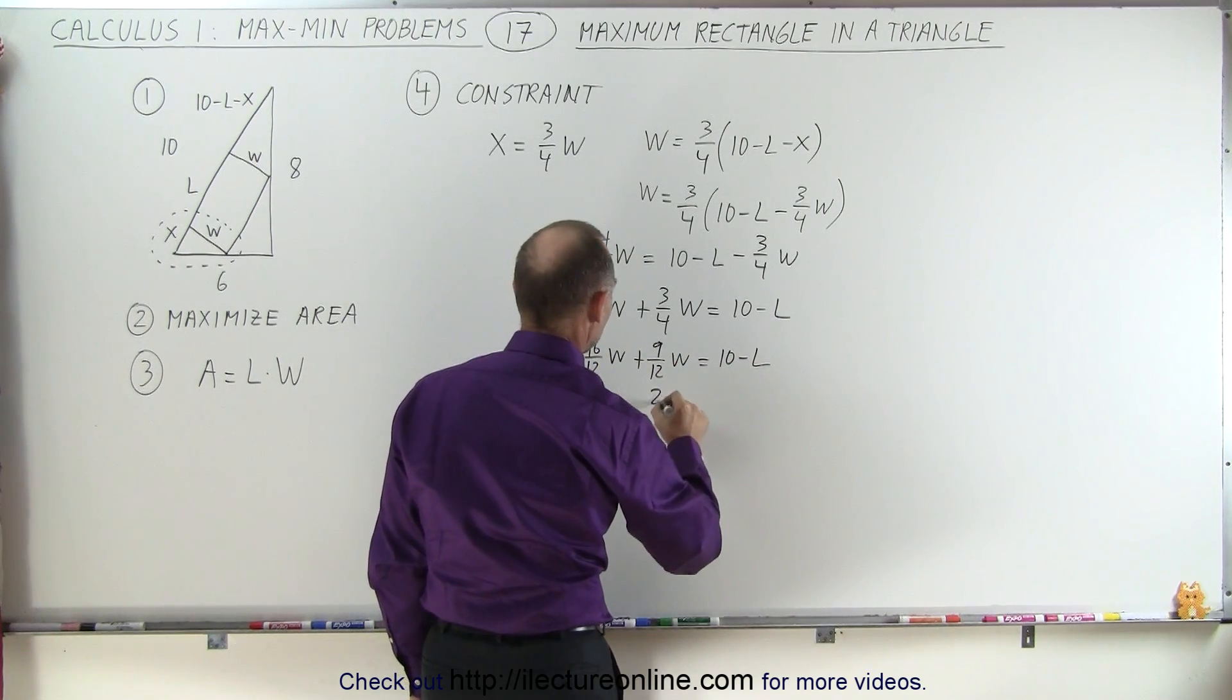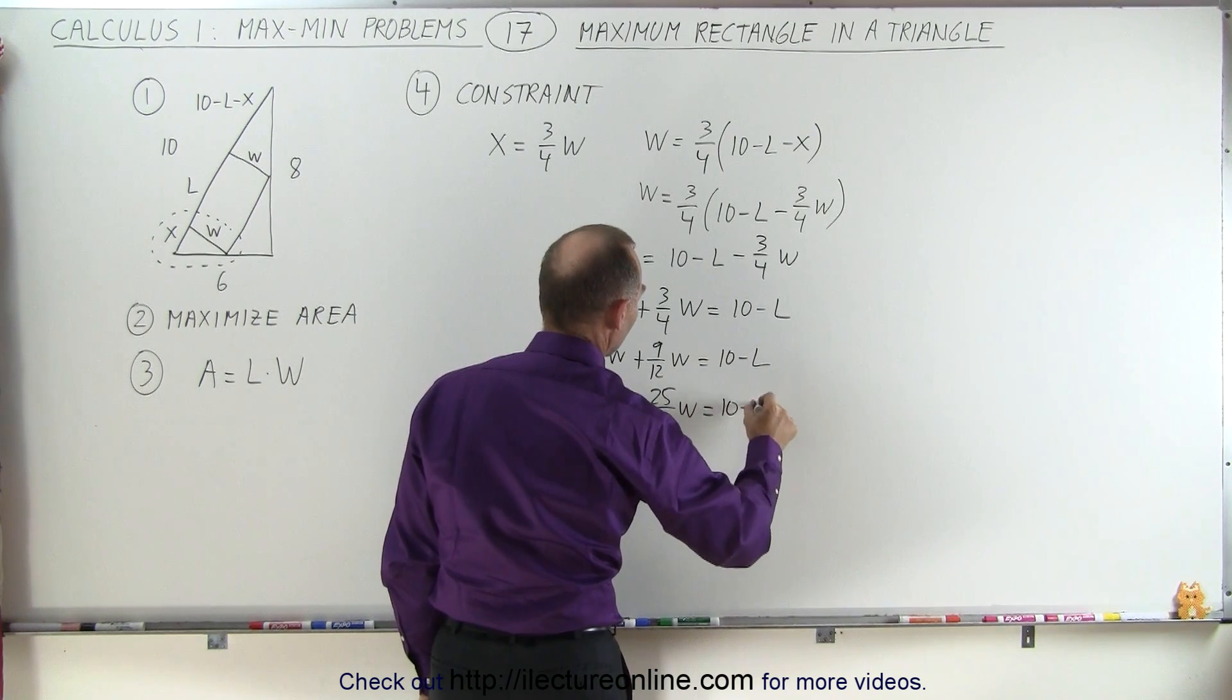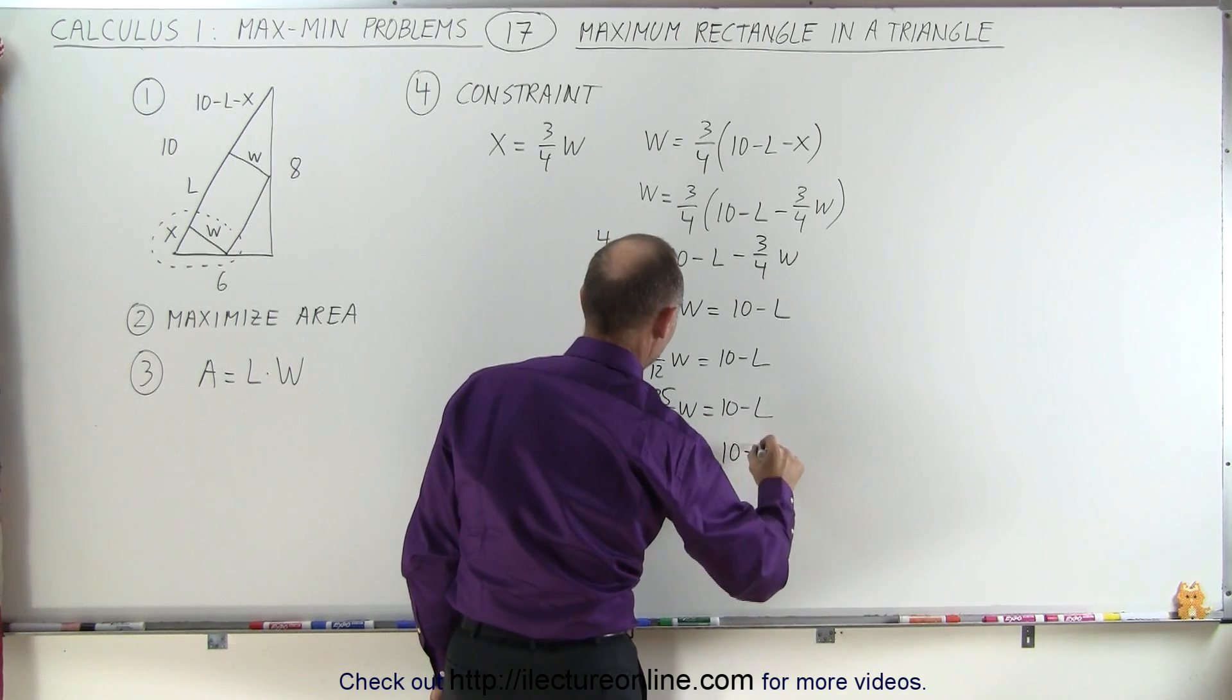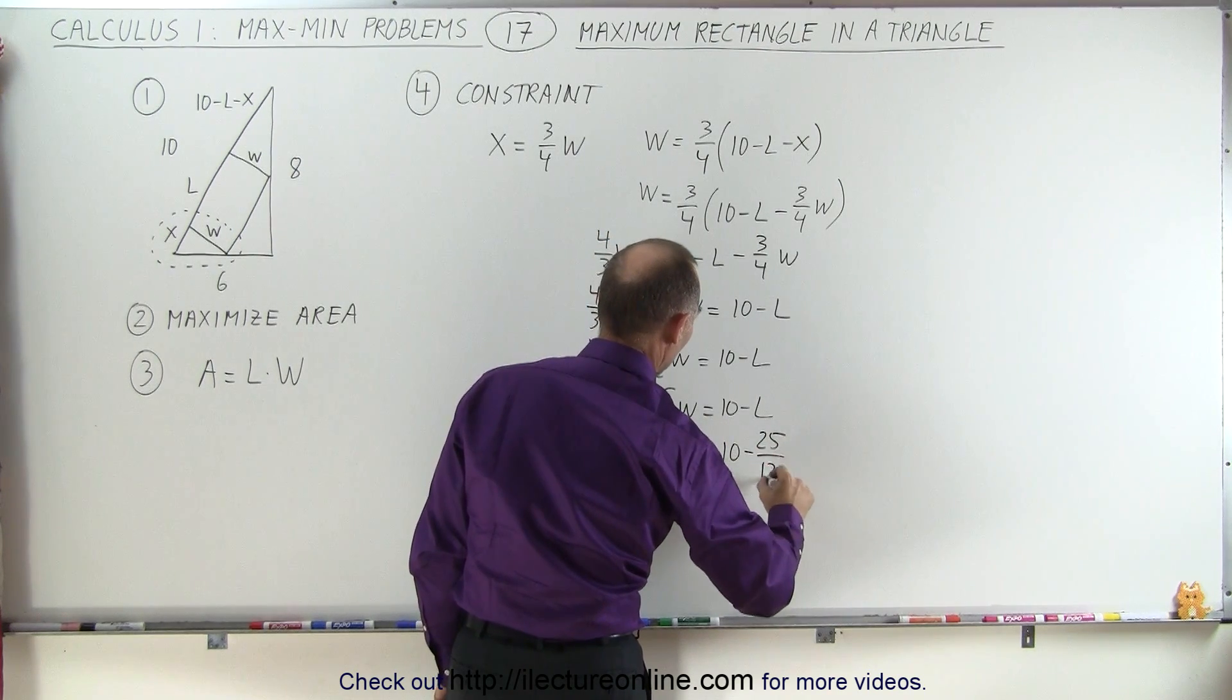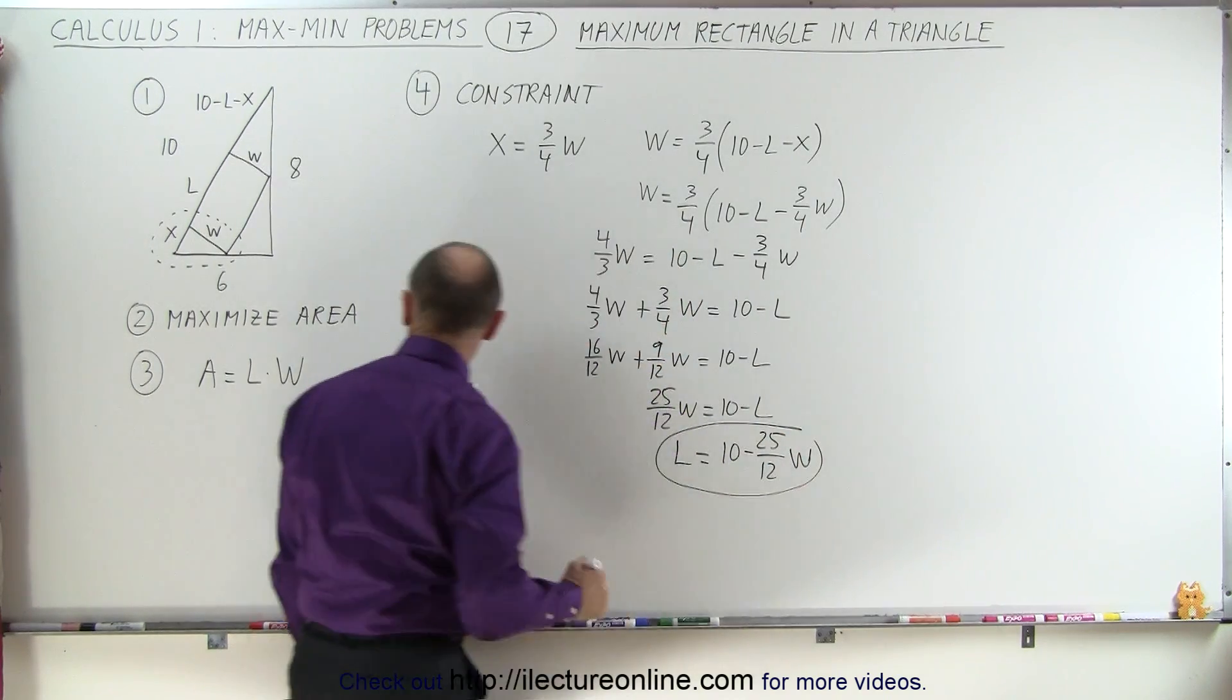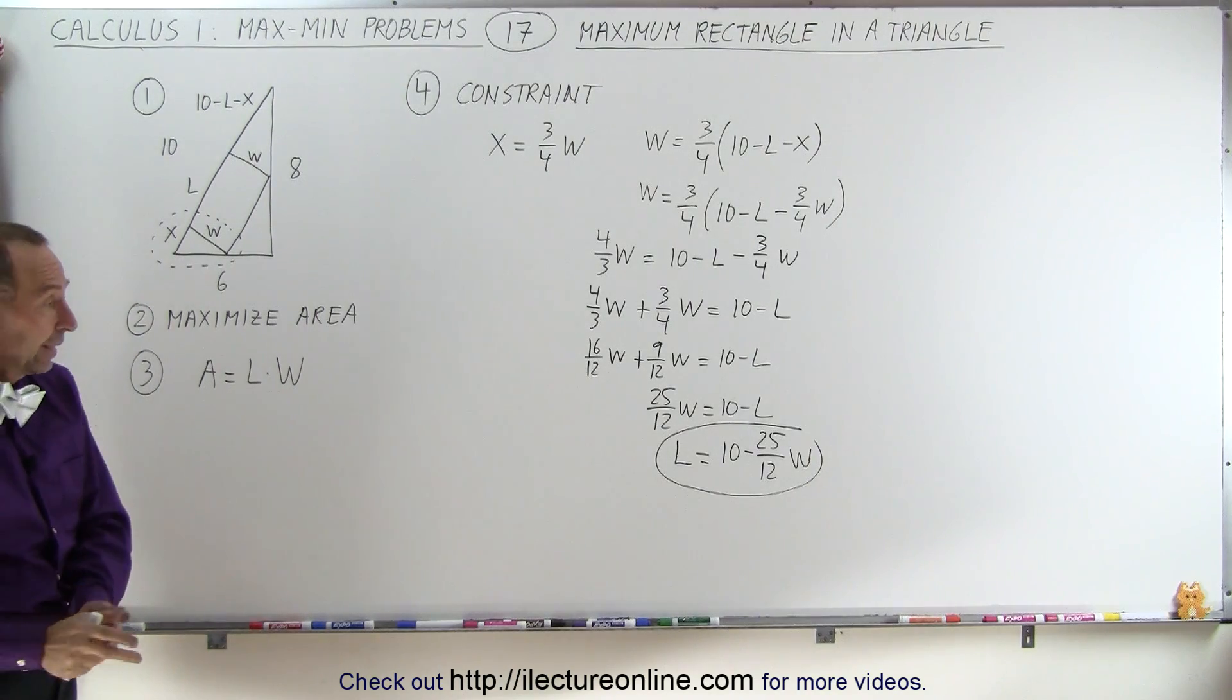Together that is 25 over 12 W equals 10 minus L or L is equal to 10 minus 25 over 12 W. And that can go into my original equation where I express area in terms of L and W. And that way I can get rid of L.